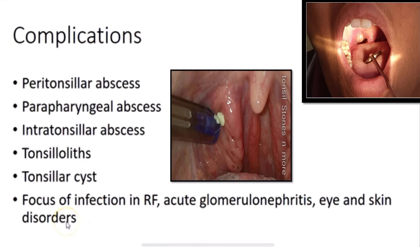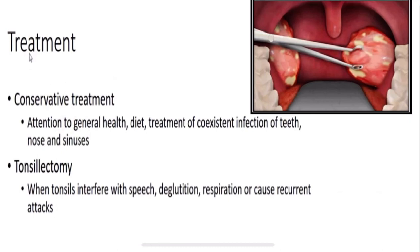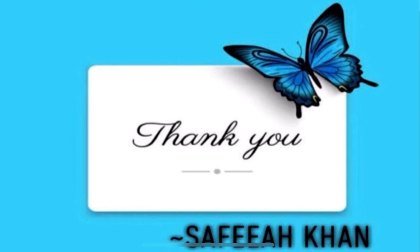Complications also include focus of infection causing rheumatic fever, acute glomerulonephritis, and eye and skin disorders. Conservative treatment involves attention to general health, good diet, and treatment of co-existing infections of teeth, nose, and sinuses. In severe cases, tonsillectomy — surgical removal of the tonsils — is indicated when tonsils interfere with speech, swallowing (deglutition), or respiration, or when recurrent attacks persist.